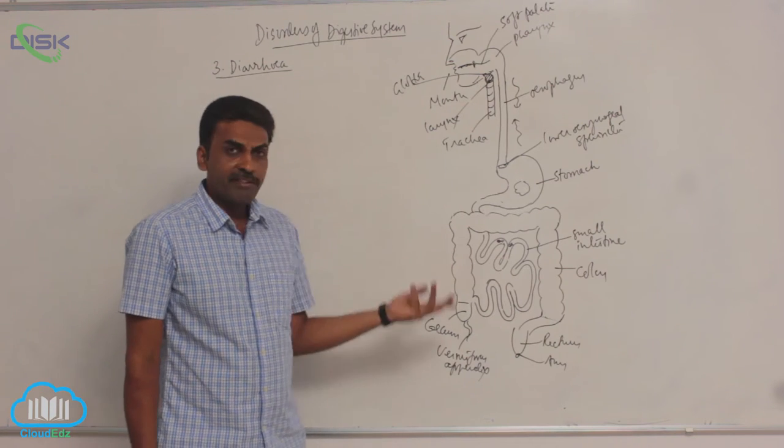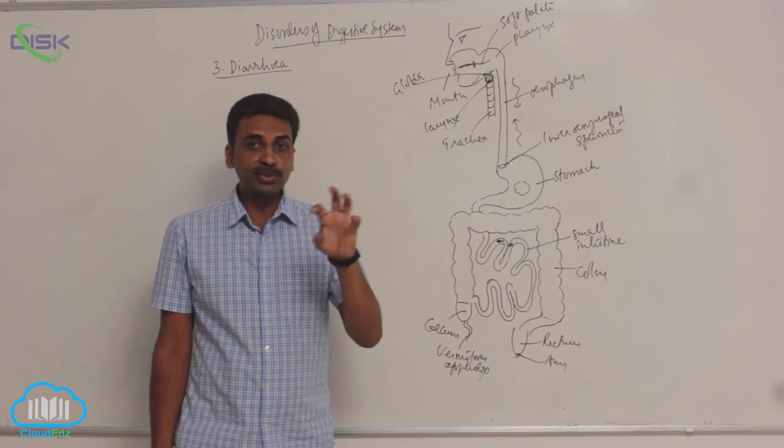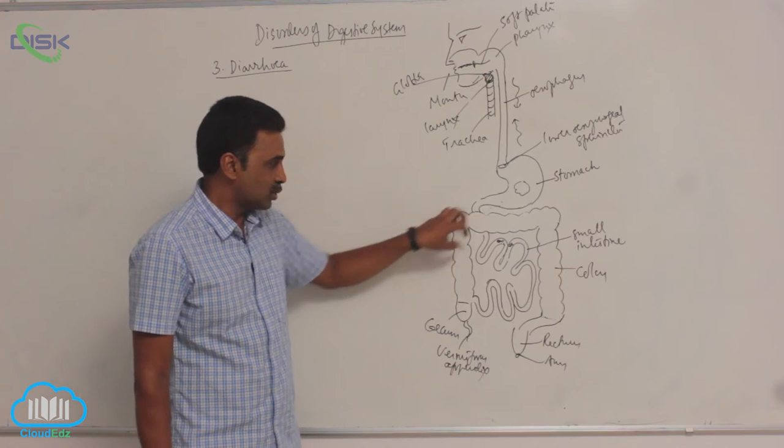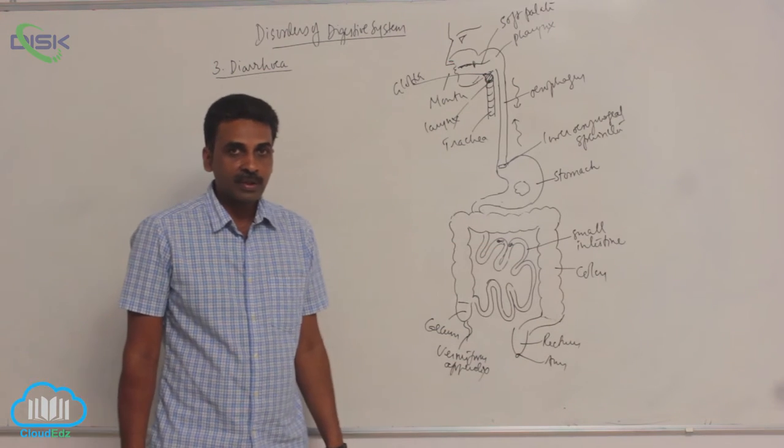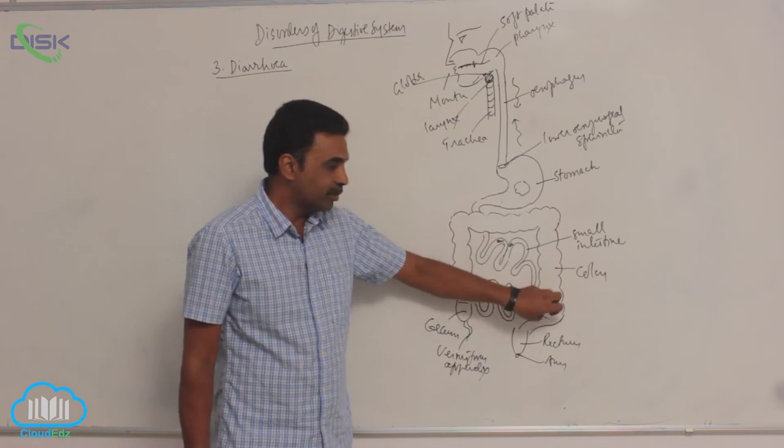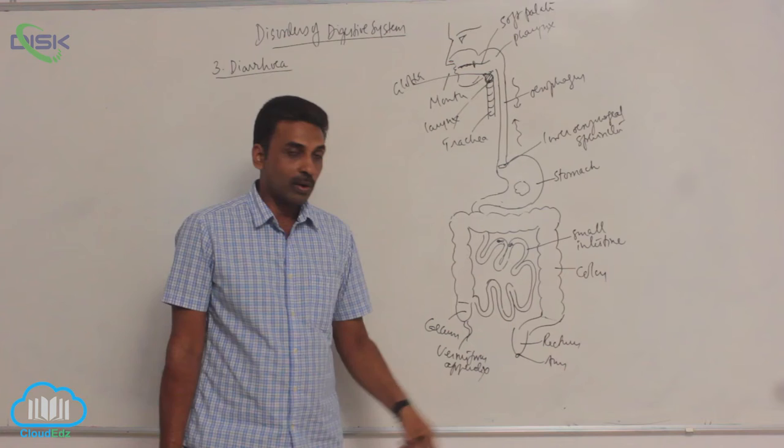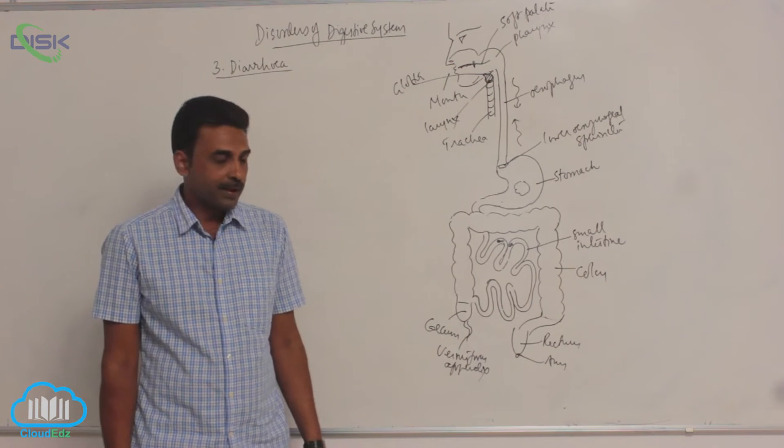Now the main function of large intestine, I mean colon, is absorption of water. So water is absorbed through the walls, and after water is absorbed, the undigested food now comes into rectum.